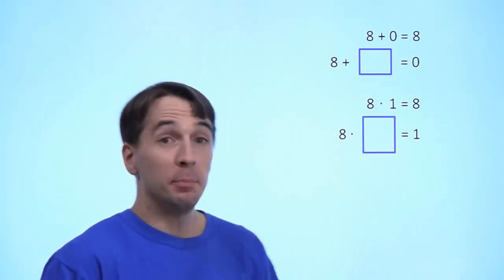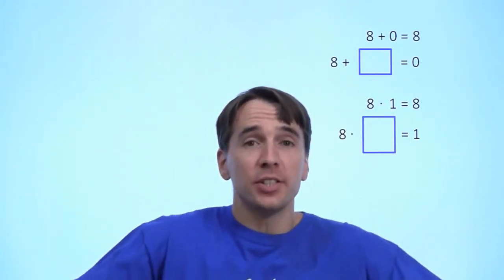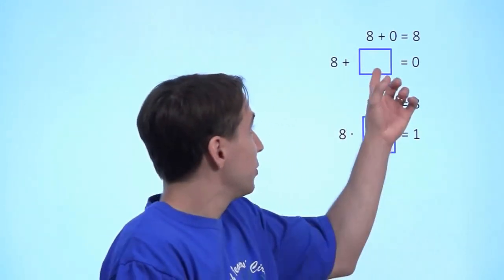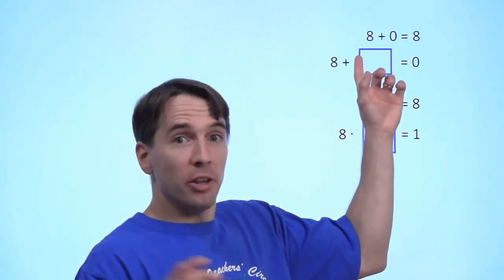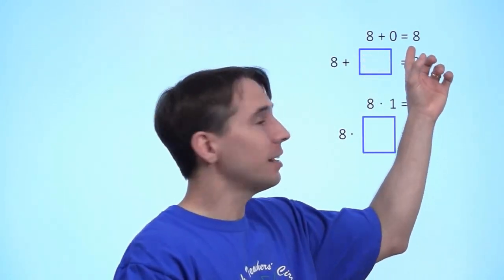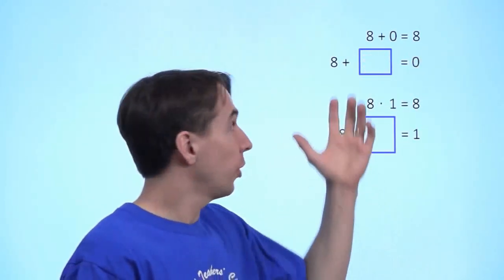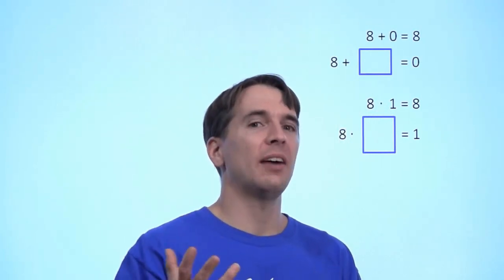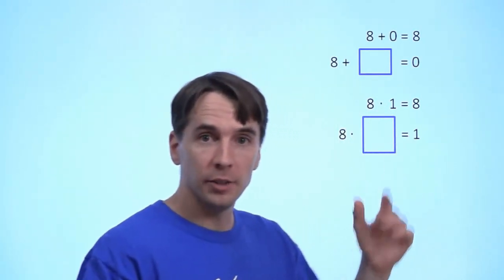8 plus 0 is 8, because that's what 0 is. 0 is defined as the number that if you take some other number and add it to 0, you get that other number back. So 8 plus 0 is 8, and for that reason we have a special name for 0. We call it the identity of addition.